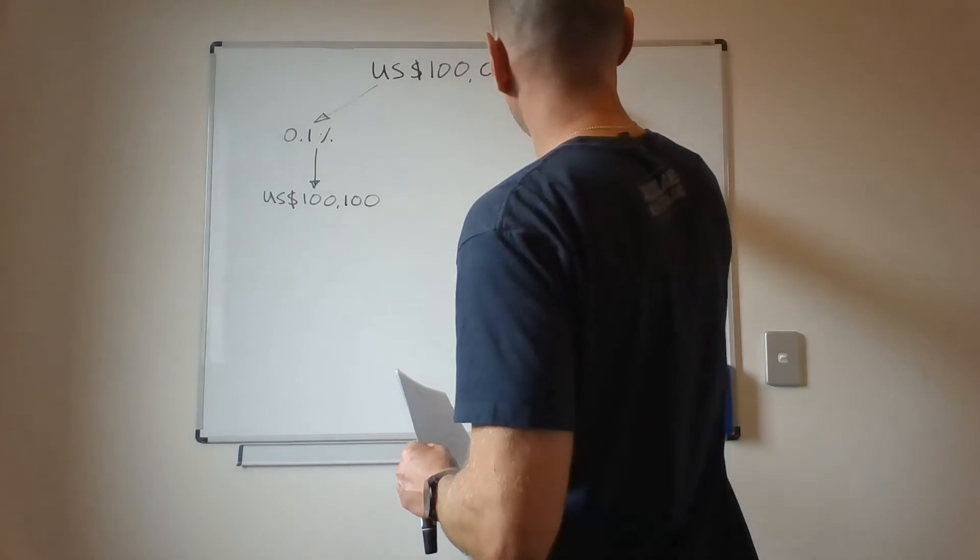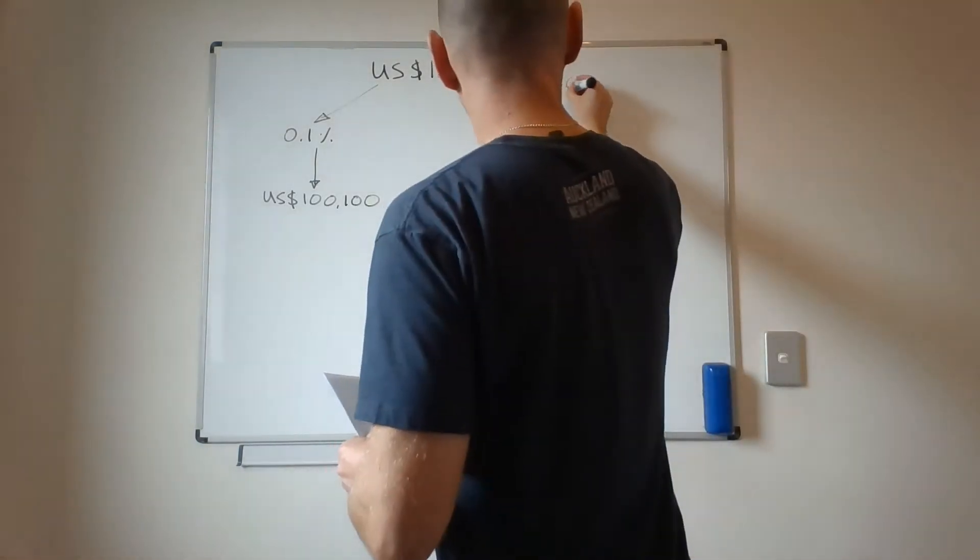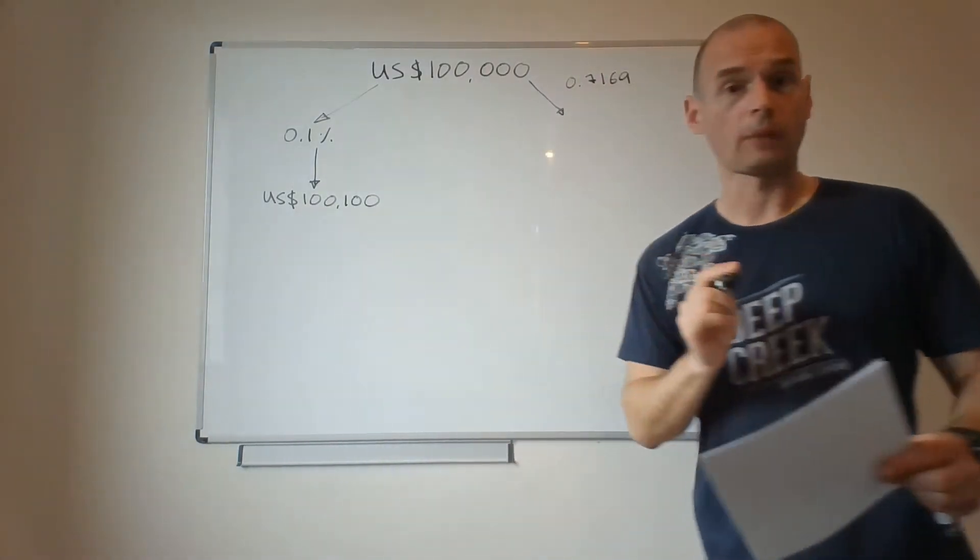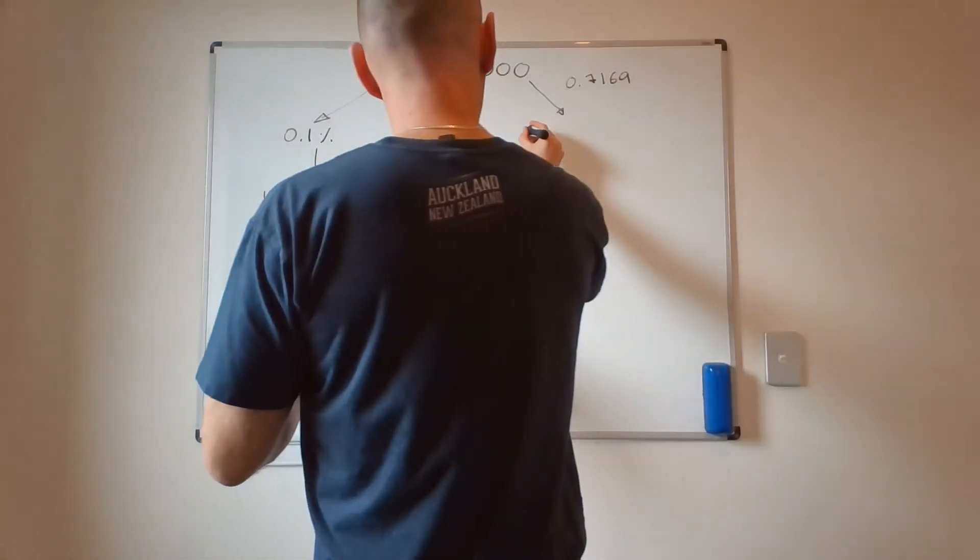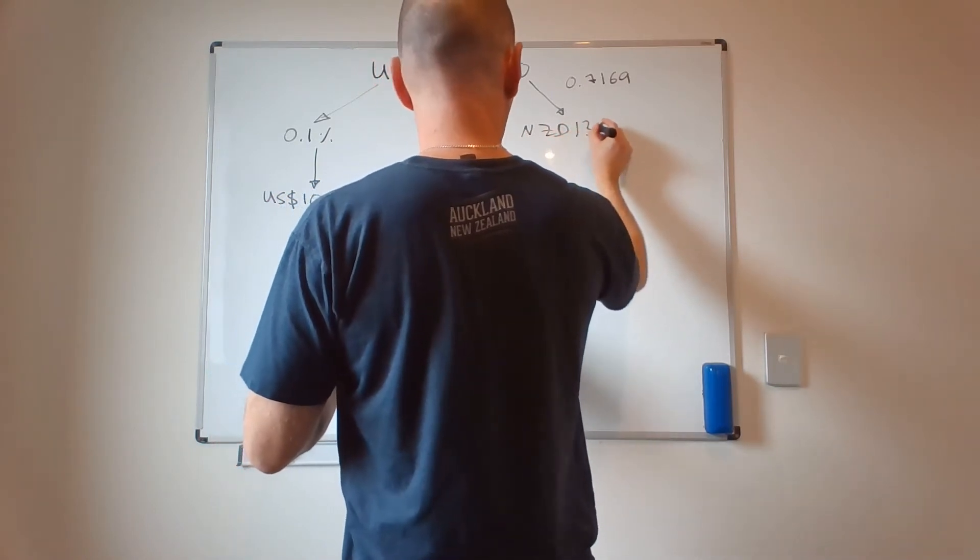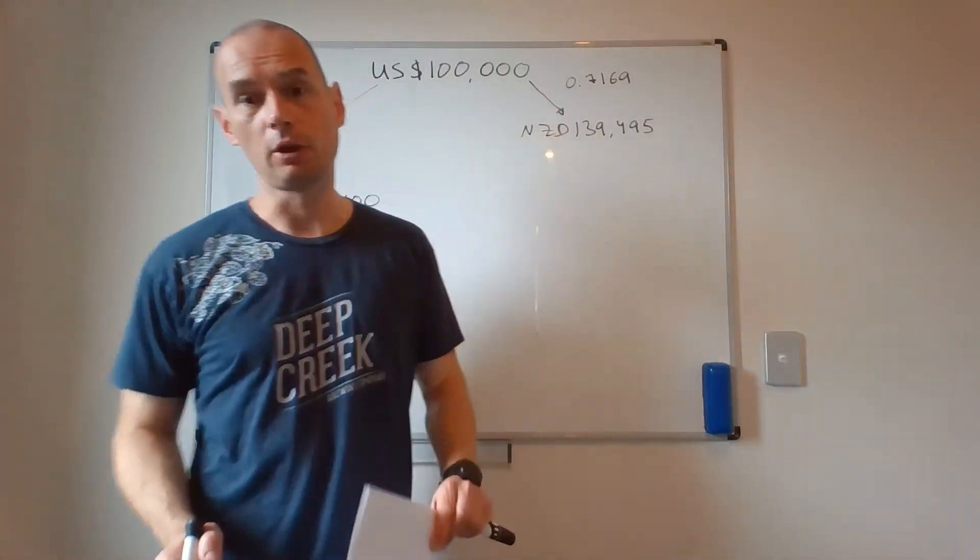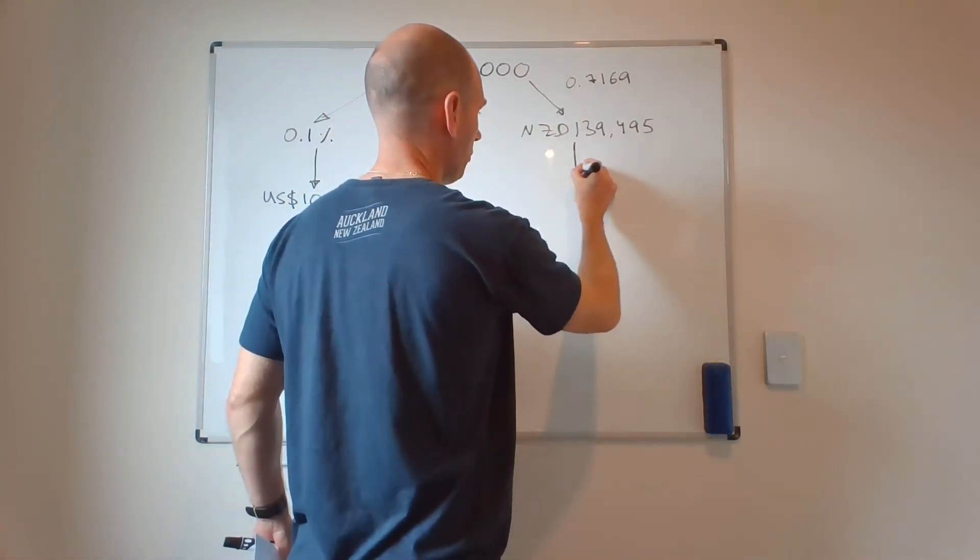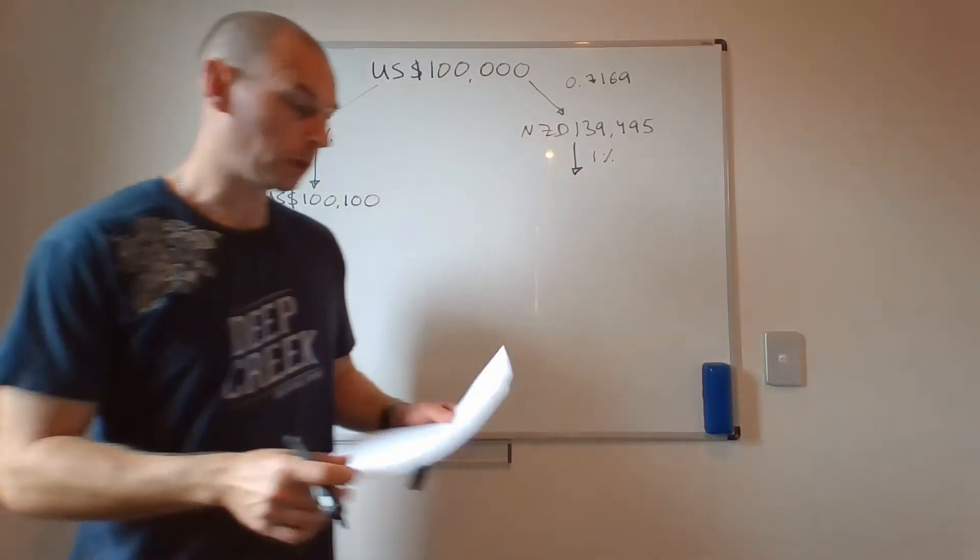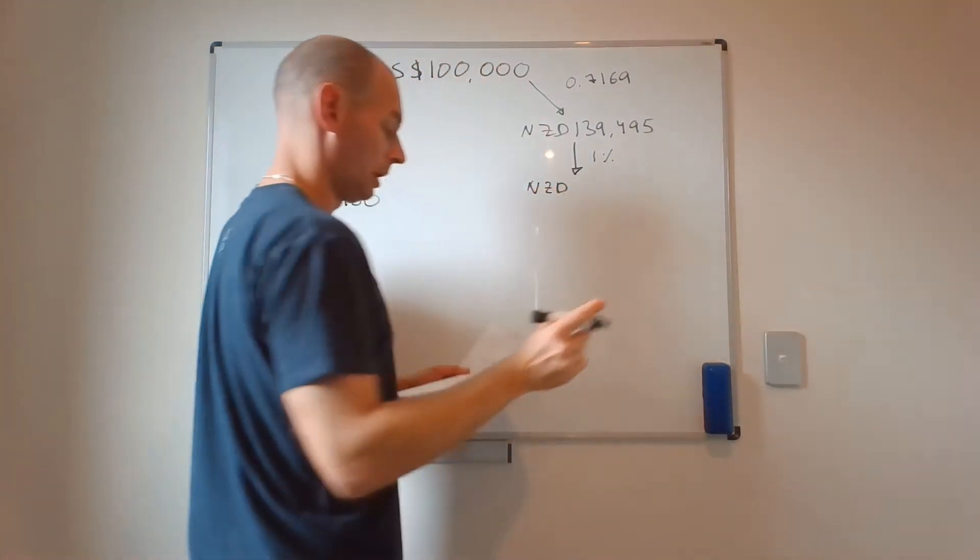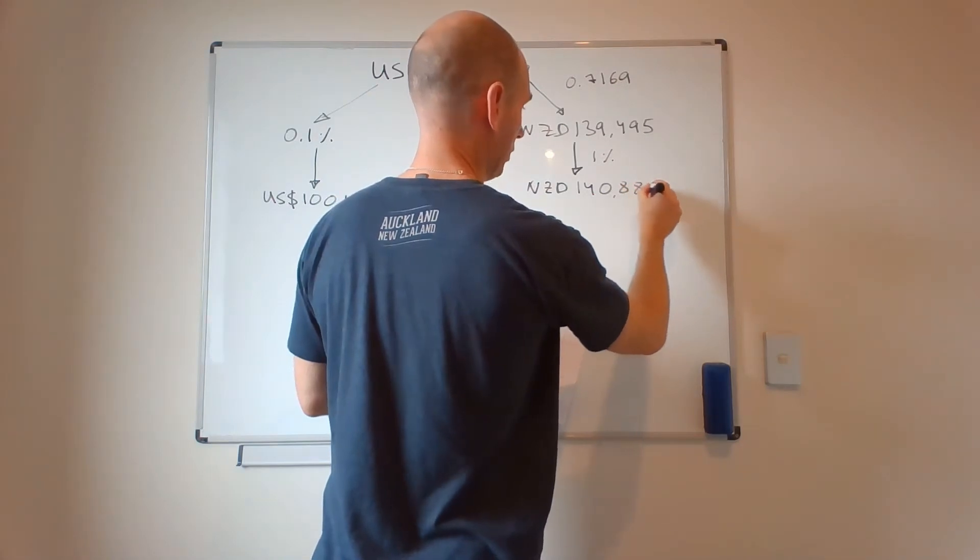Or, the current exchange rate between the US and New Zealand dollar is 0.7169. So one New Zealand dollar will buy you 0.7169 US dollars. That will give you NZ$139,495. And we will assume, which is actually pretty close to the truth, that the interest rate in New Zealand at the moment is 1%, which means that a year from now your balance will be NZ$140,889.95. So that makes sense.